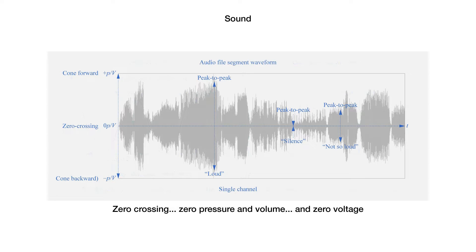Loudspeaker cones or headphone diaphragms move air molecules backwards and forwards. A plotted audio waveform looks symmetrical, and the volume at any moment depends on both positive and negative domains — on the peak-to-peak level. At the zero crossing, the pressure and volume are zero. That's also where you want to cut and splice your samples when editing music.